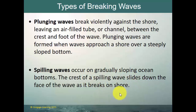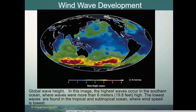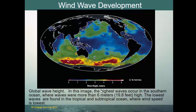Where would you find the biggest waves? Where you have the highest winds — the mid-latitude westerlies moving across the Pacific and Atlantic Oceans, and very specifically across the southern Pacific, southern Indian Ocean, and southern Atlantic Ocean, because those southern ocean winds are not impeded by land. The highest waves occur in the southern ocean, where waves are more than six meters — about 20 feet high. The lowest waves are found in the tropics, where we have the doldrums, with not much wind and therefore not many waves.